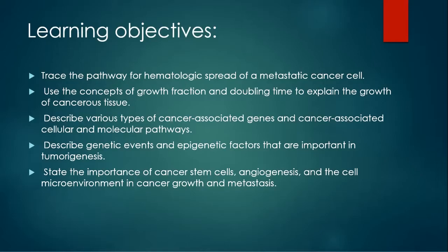The learning objectives of today's lecture are: you will be able to trace the pathways for hematological spread of a metastatic cancer cell; use the concepts of growth fraction and doubling time to explain the growth of cancerous tissue; describe various types of cancer-associated genes and cellular and molecular pathways; know about genetic events and epigenetic factors important in tumorigenesis; and have knowledge about cancer stem cells, angiogenesis, and the microenvironment in cancer growth and metastasis.